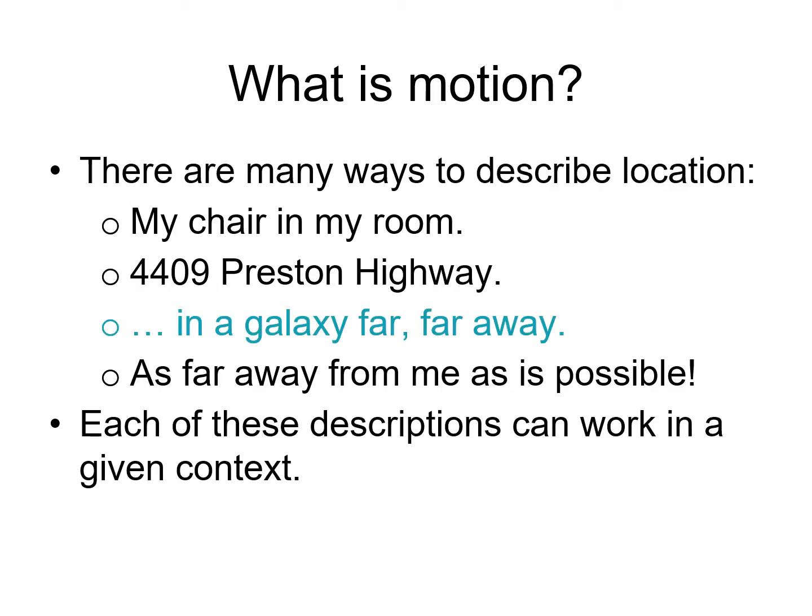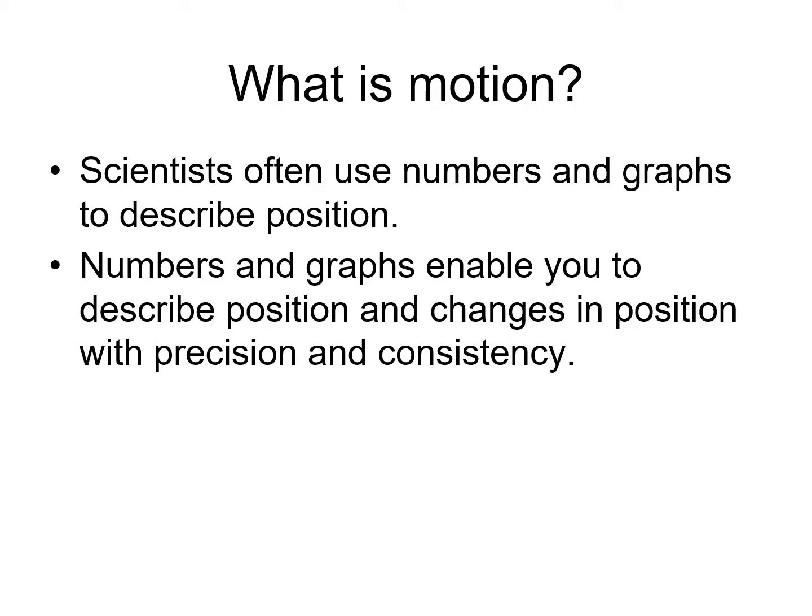Now there are many ways to describe an object's location. Here are several. Each of these descriptions could work in a given context and of course there are many other ways to describe location as well. What we need to do is figure out a way to describe location in such a way that we can quantify displacements, movements, and other variables that are associated with motion. So we need to look at how to use numbers and maybe graphs to describe location or position. By using numbers and graphs we can describe positions with precision and consistency and we can agree with each other about what we are measuring and what our measurements mean.